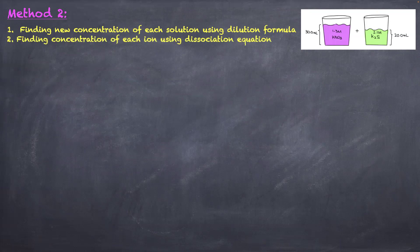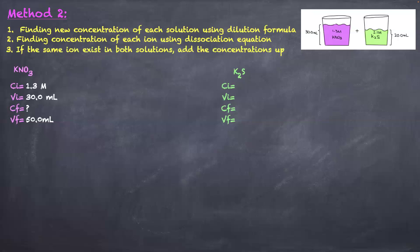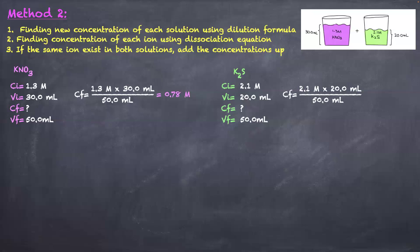In method two, the first step is to use the dilution formula to find the new concentration of each salt. The second step is to find the concentrations of each ion using the dissociation equation, and if the same ion appears in both solutions — like K⁺ here — you add the concentrations. For KNO₃: initial concentration 1.3 M, initial volume 30 mL, final volume 50 mL. For K₂S: same approach with its initial concentration and volume. So the final concentration equals C_initial × V_initial divided by V_final.